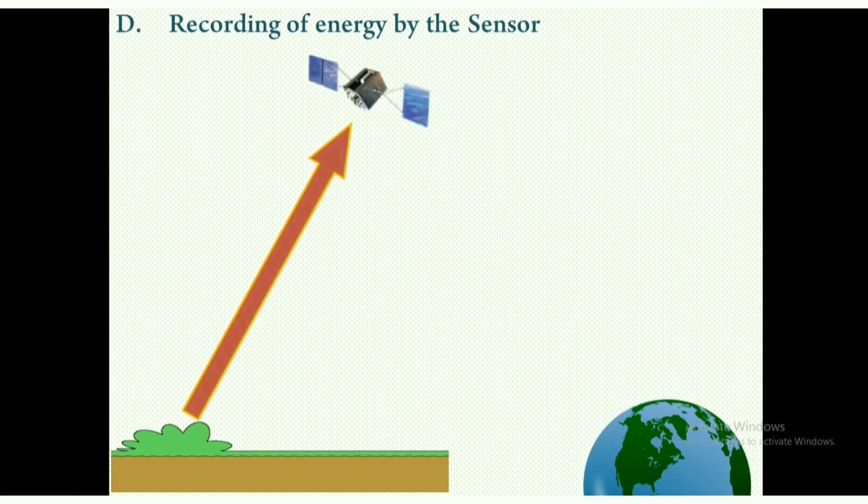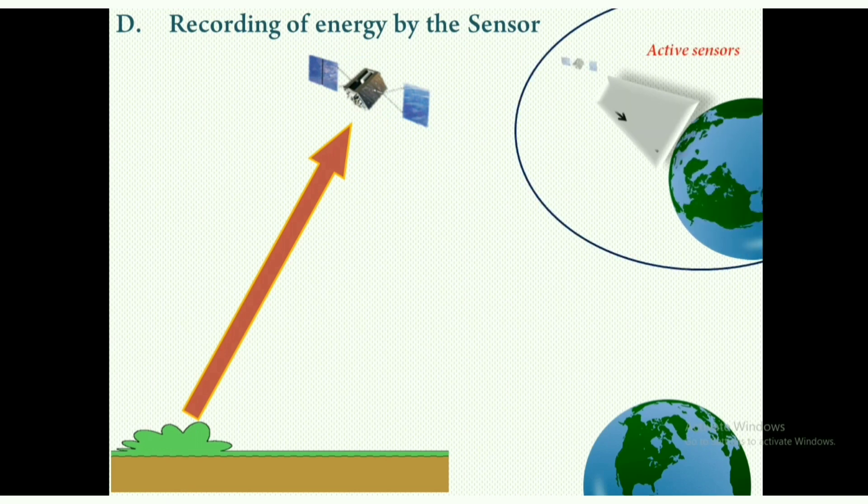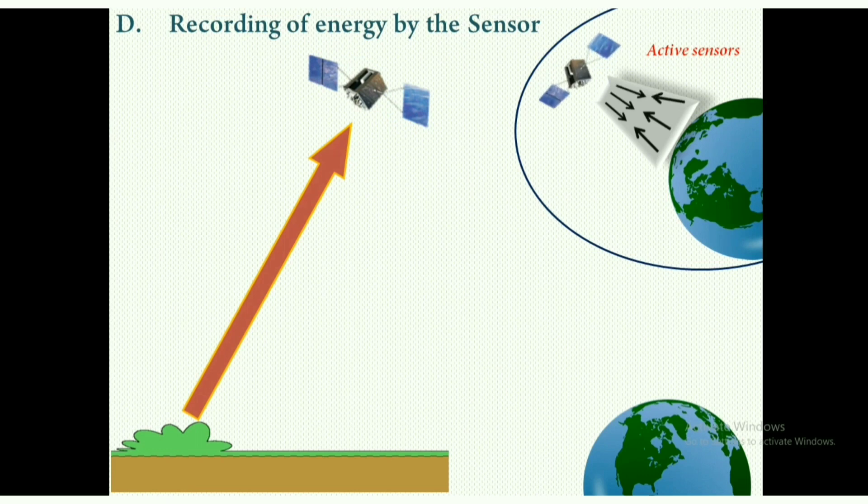When the energy radiates from the target, a sensor is required to collect and record the electromagnetic energy. A sensor may be active or passive. Active sensors are those which have their own energy source for illumination, for example SAR (Synthetic Aperture Radar), laser fluorosensor, etc.